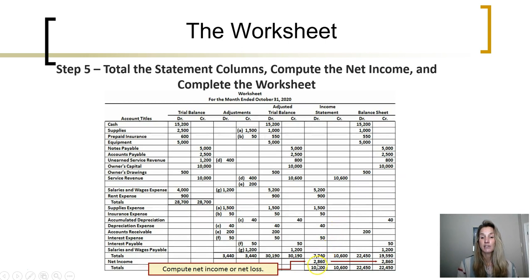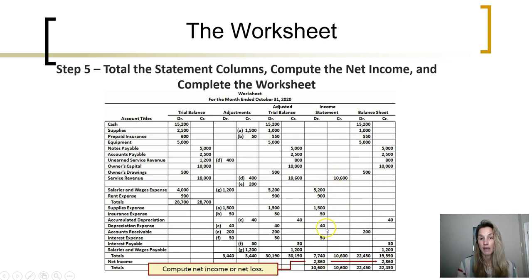Once that is done, we can see the total debits reported on the income statement, which reflect the expenses, and the total credits reflecting the revenues. The difference between revenues and expenses is net income. Over on the balance sheet side, the total debits and total credits do not match — but the difference between these two is really a function of net income, because right now all of the net income is currently recorded in the income statement accounts. So we see the amount of net income appear in the income statement debit column and the balance sheet credit column.